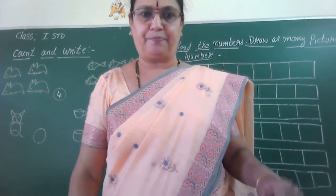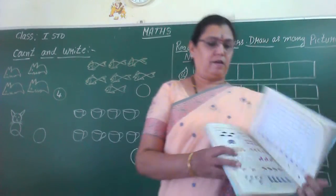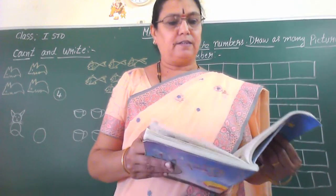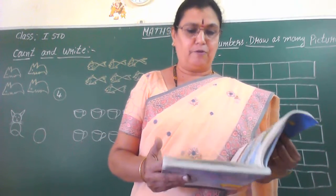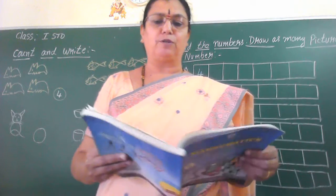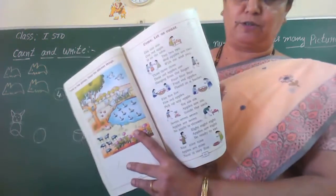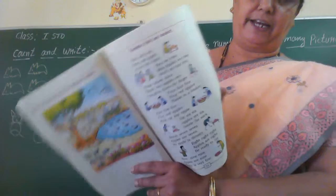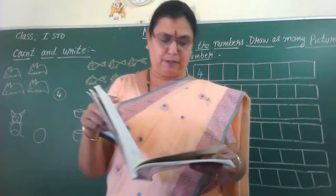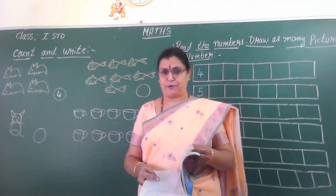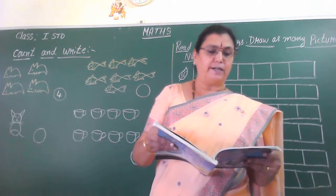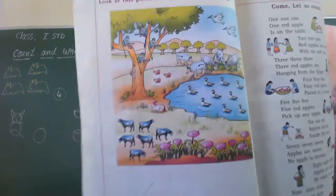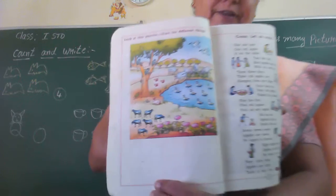Good morning children. In the last class we did number counting. Come let us count. With the rhymes we did this also. Okay children, did you learn this? One to nine. Open your maths textbook, page number fifty-four. We counted and by seeing the pictures we counted and numbered. Okay children, I hope you have done that.